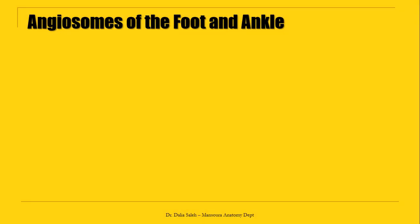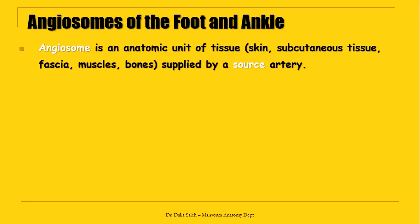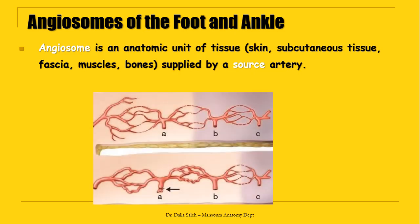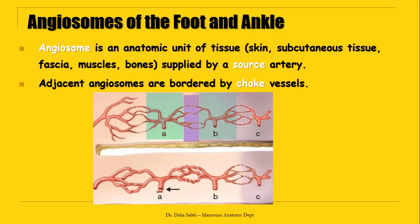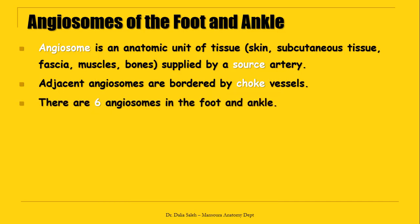For the blood supply of the foot and ankle, we begin with the definition of angiosome. An angiosome is an anatomic unit of tissue made of skin, subcutaneous tissue, fascia, muscles, and bones. These angiosomes are supplied by a source artery. Adjacent angiosomes are bordered by choke vessels — vessels with smaller diameter than the source artery, but with the ability to dilate and increase blood flow if there is obstruction of one of the source arteries. There are six angiosomes confined to the foot and ankle.